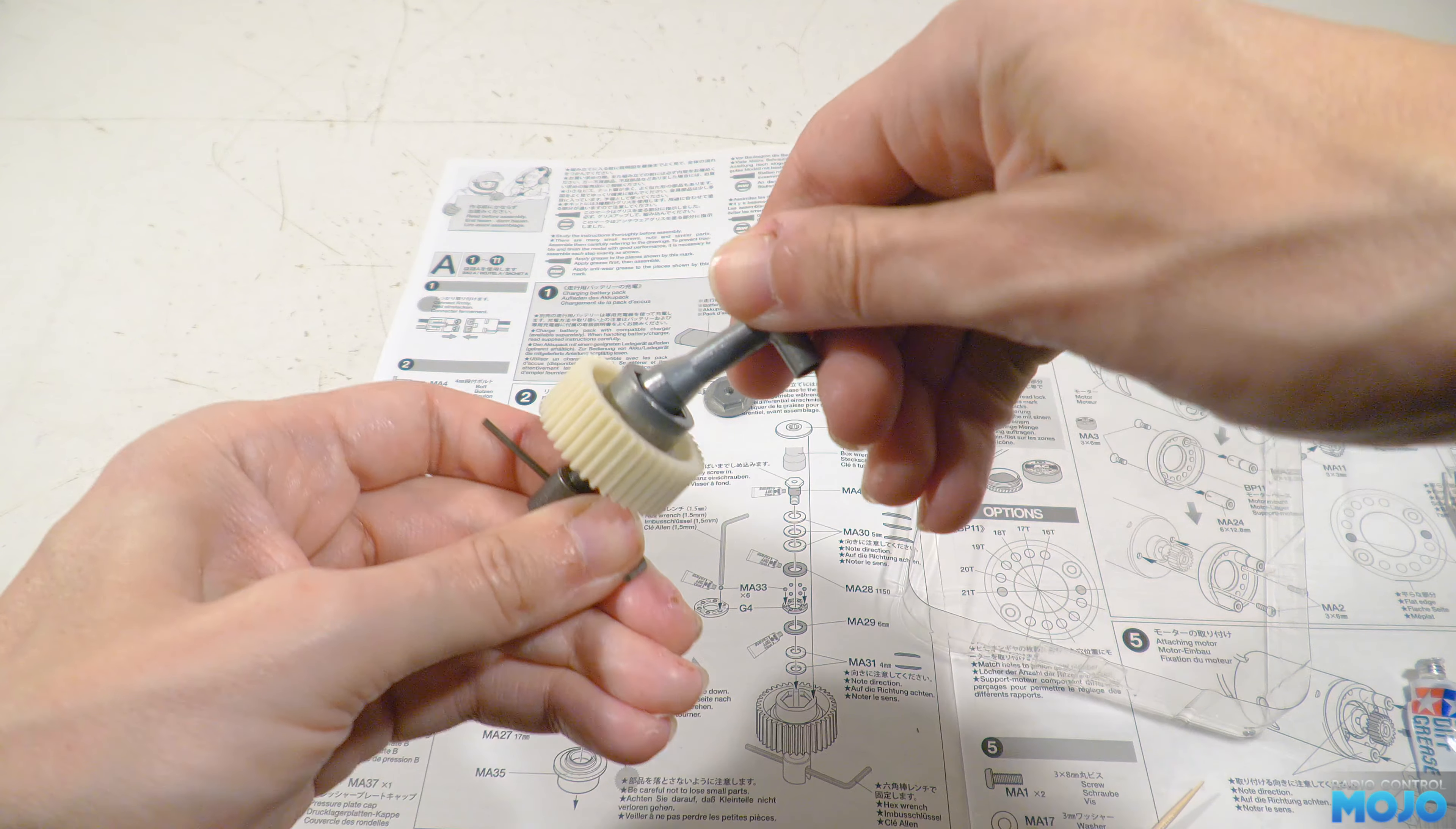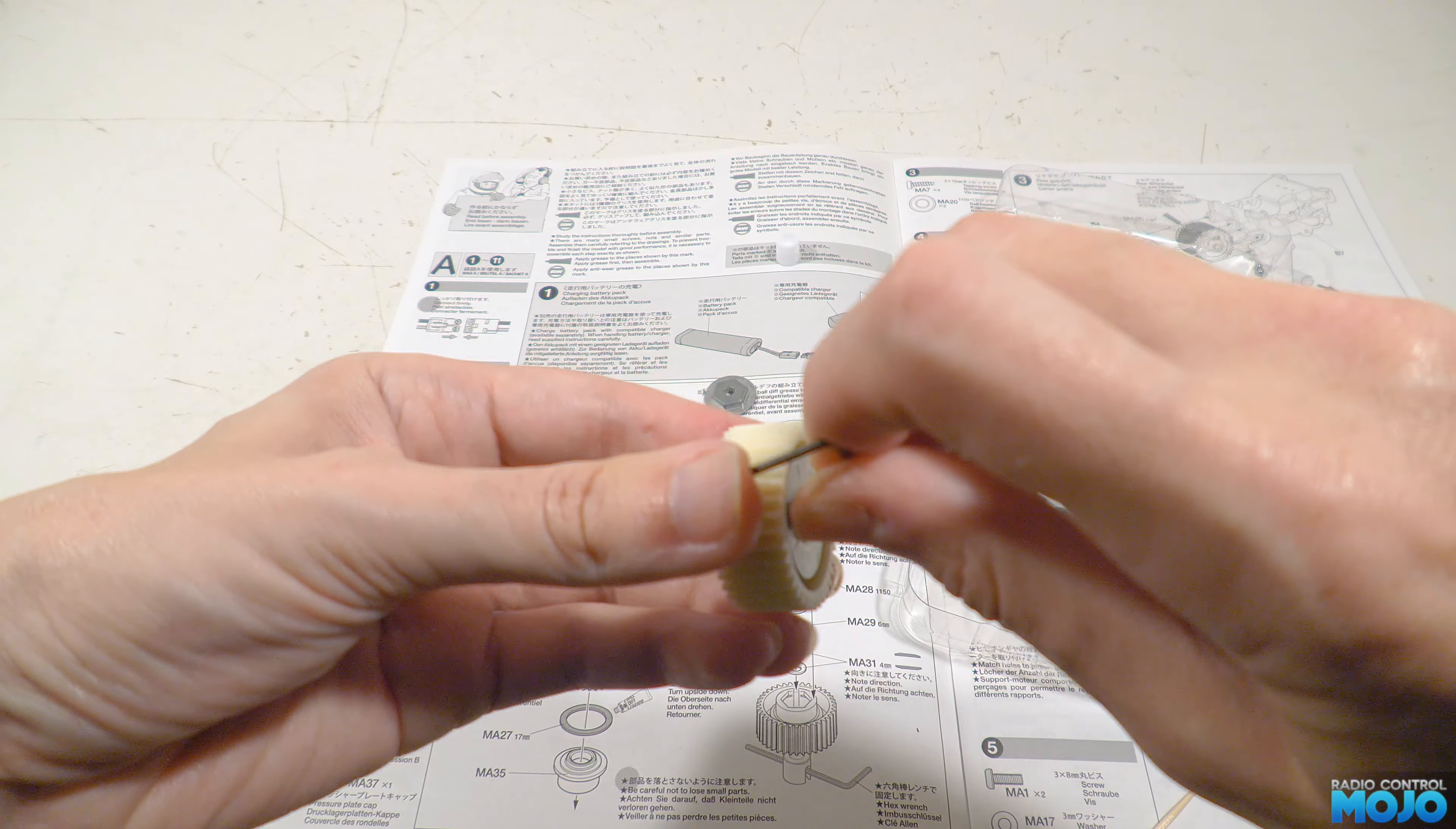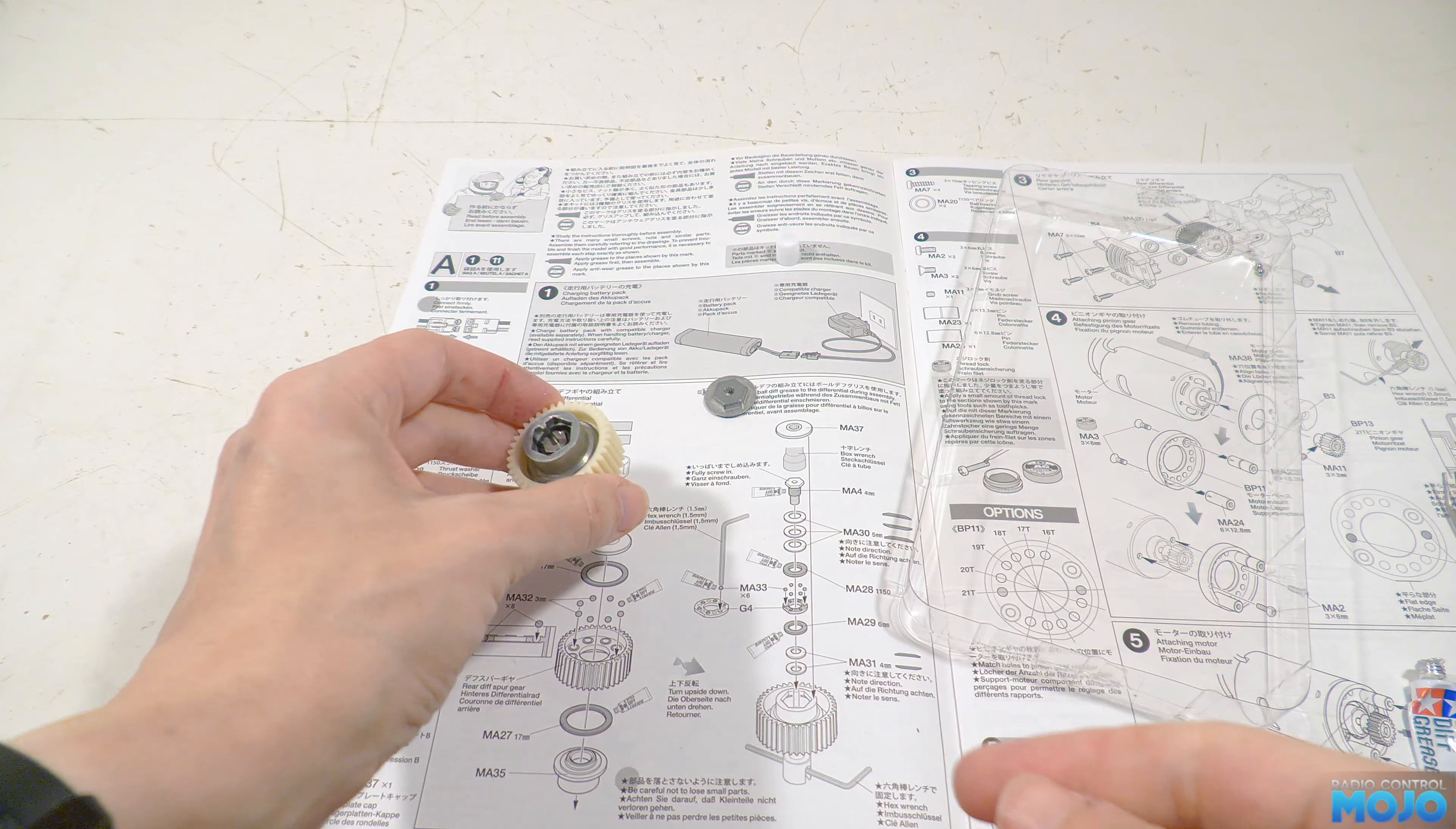When done, you should be able to hold the gear in one hand, and with the Allen key slotted into the drive cup, you should be able to spin the internals of the diff. It'll be fairly stiff and might feel a little bit grainy, but importantly, it should be consistent and not catch or get stuck. If so, that's the diff complete and ready to fit.